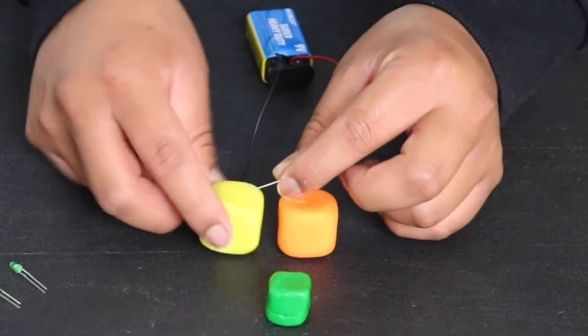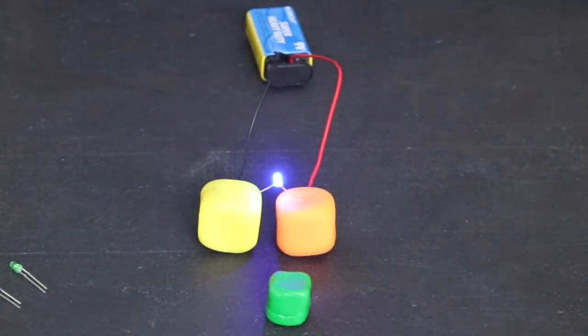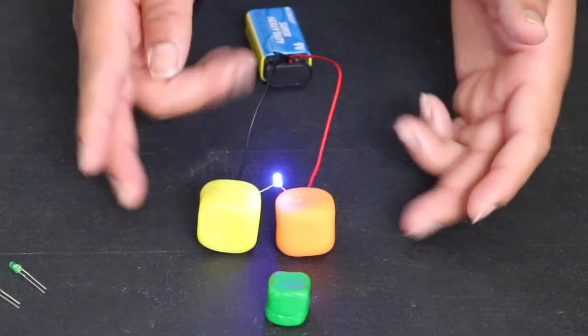It's now time to plug in the short leg into the other lump of play-doh. What is happening now? Your LED light should light up. Why does this happen? We have now closed the circuit. There is now a complete path for electricity to flow.